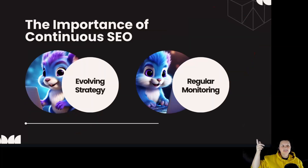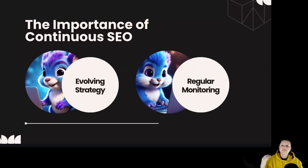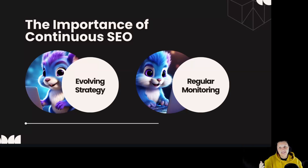The importance of continuous SEO — evolving strategy. SEO is a continuous process requiring regular updates. Regular monitoring: constantly track, tweak, and improve your site and strategy. A successful SEO strategy is one that evolves over time. Regular monitoring and adjustments are crucial to staying ahead in the competitive digital landscape.